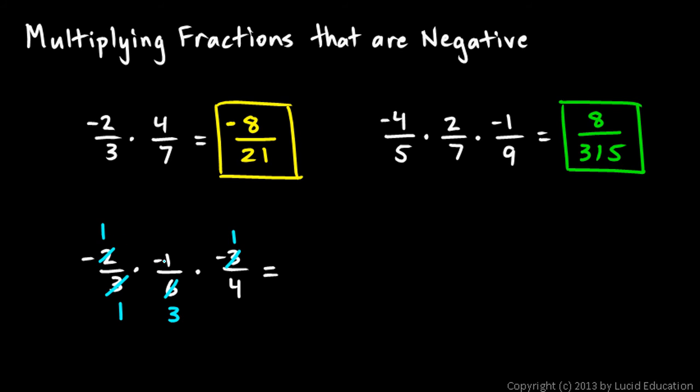That's 1. And down on the bottom, 3 times 4, which is 12. And my answer has to be negative. Don't forget that. So, negative 1 twelfth.